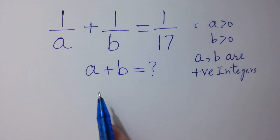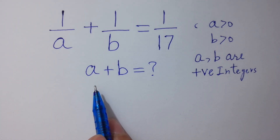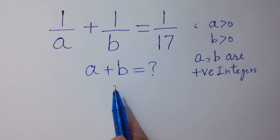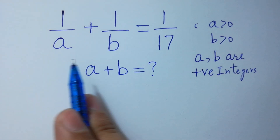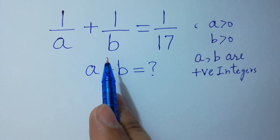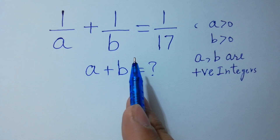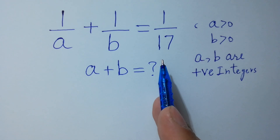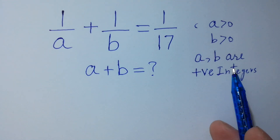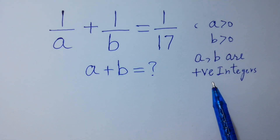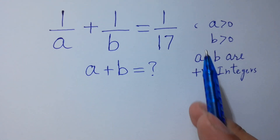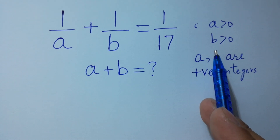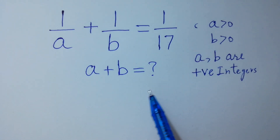Hello friends. Find the value of a plus b if 1 over a plus 1 over b equals 1 over 17, where a and b are positive integers with a greater than 0 and b greater than 0. Let's have a solution here.